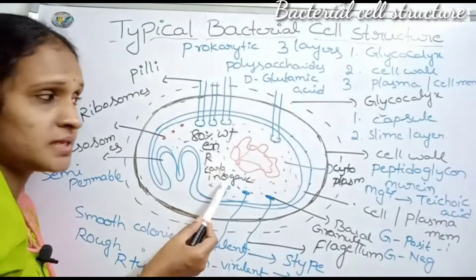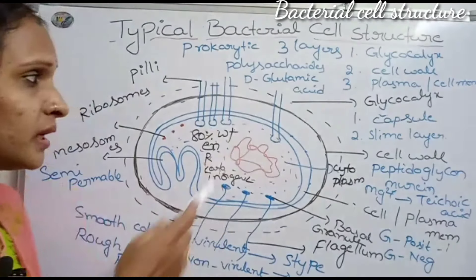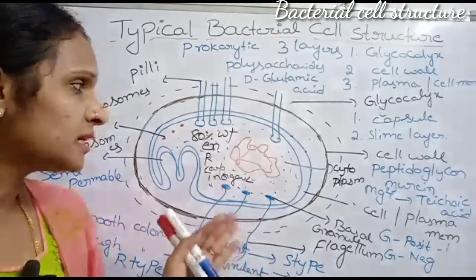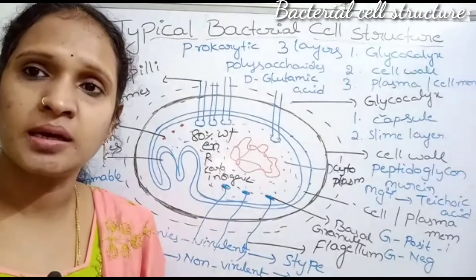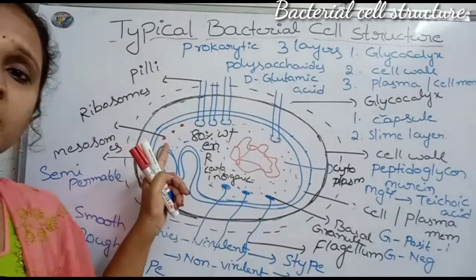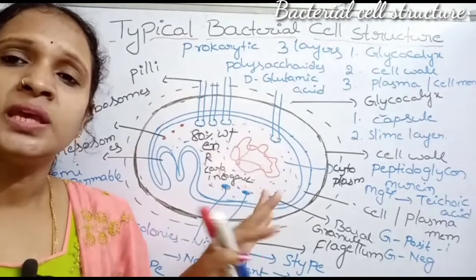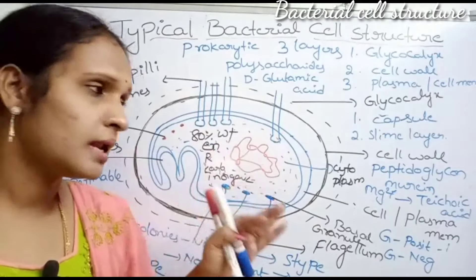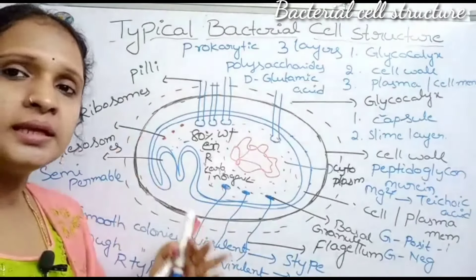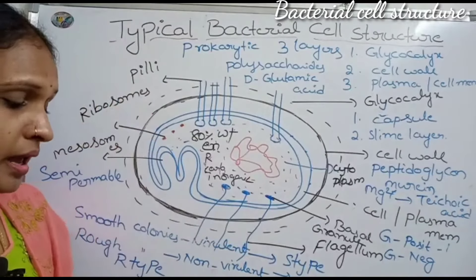Although the cytoplasm contains all cell organelles in eukaryotes, bacteria is a prokaryotic organism, so they do not have any membrane-bound cell organelles. In prokaryotic organisms, only ribosomes and nucleoid are present; all other cell organelles are absent. Eukaryotic organisms have all cell organelles.